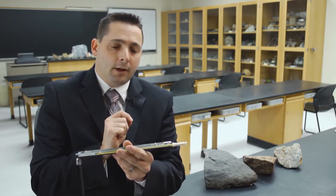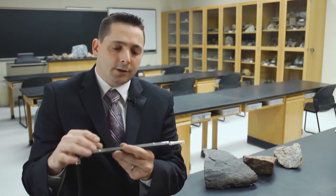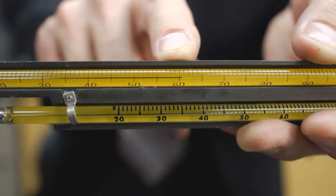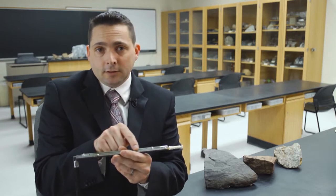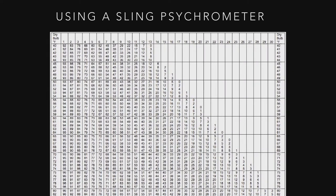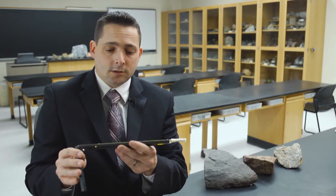Then all we need to do is measure the change in temperature on the wet bulb and locate that difference in temperature on a chart of relative humidity based on the temperature of the room. And we can easily determine the relative humidity on that day in that location.